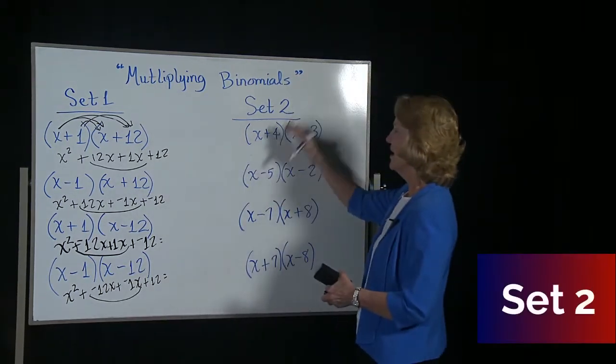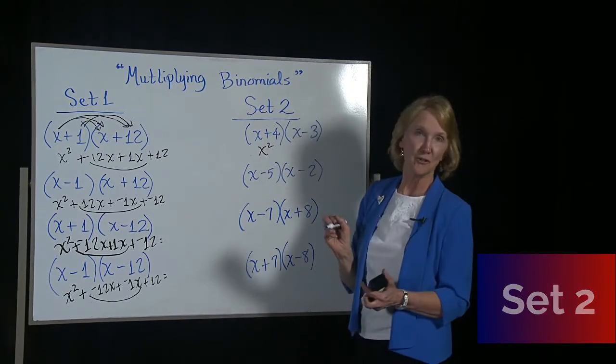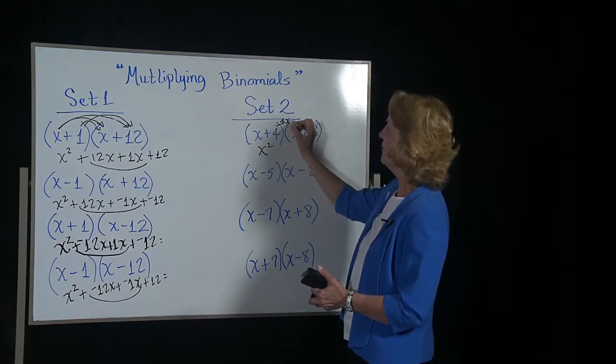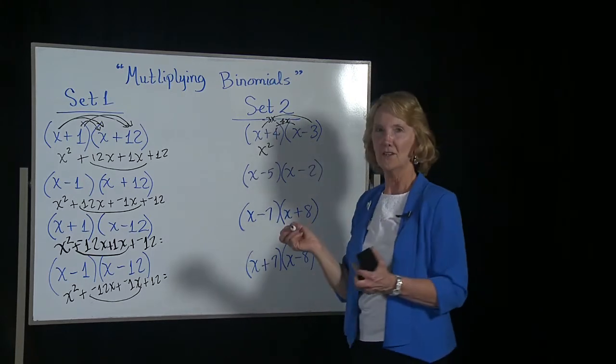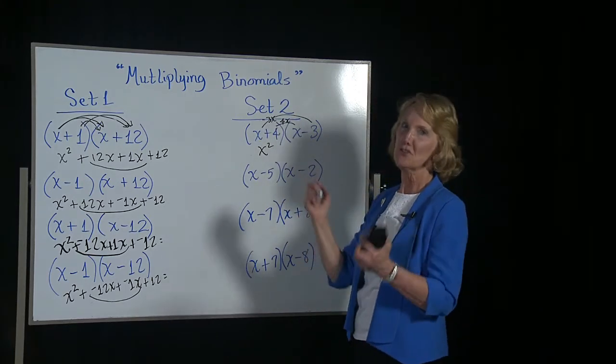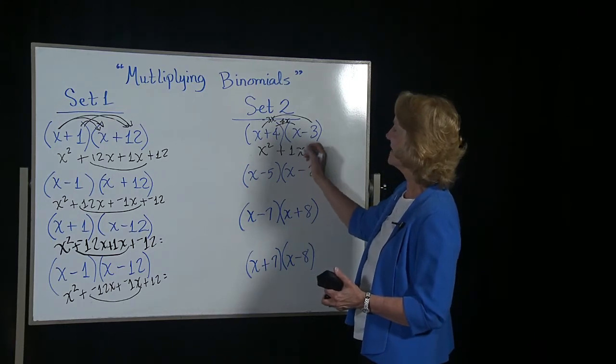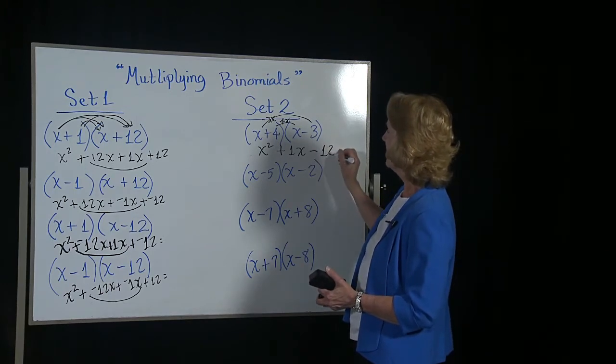For set 2, I have x times x, that'll be x squared. Now I want you to do this in your head or just do it up here. Positive 4x and then negative 3x. Positive 4 would be like if you had 4 dollars and you spent 3, you would have 1 dollar or 1x. Now 4 times the negative 3 gives you minus 12.